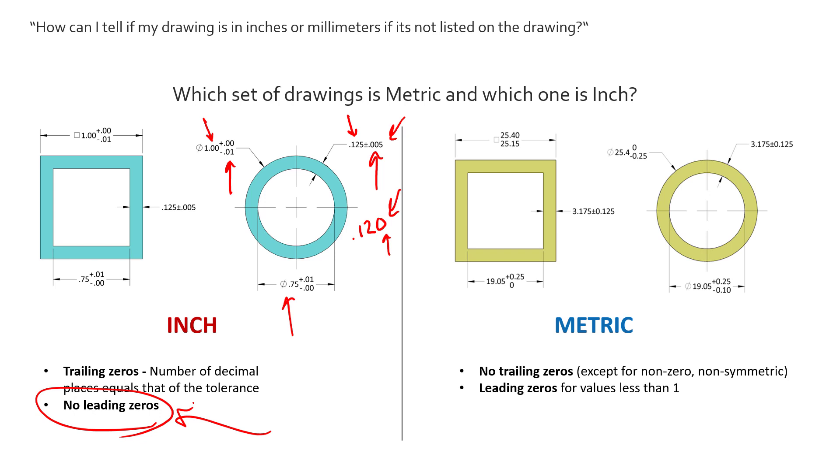Now on the flip side, metric will have no trailing zeros except for non-zero non-symmetric dimensions. What does that mean? That looks like something over here where we have a dimension where we have no trailing zeros because it is a zero tolerance.